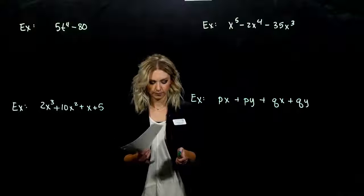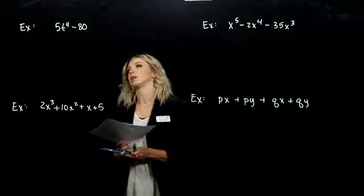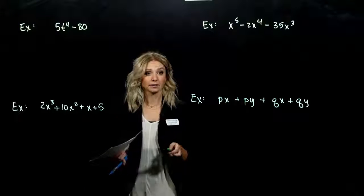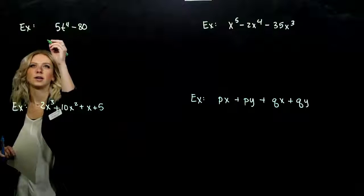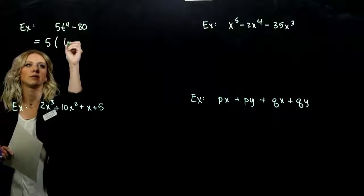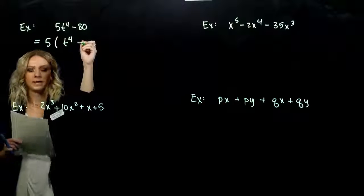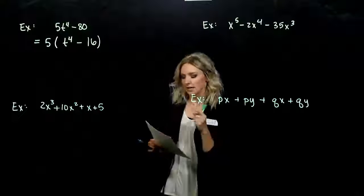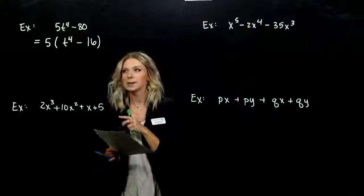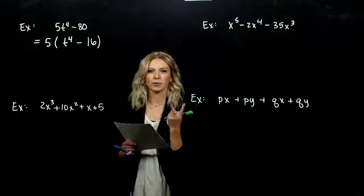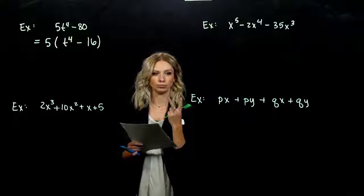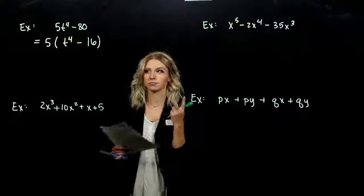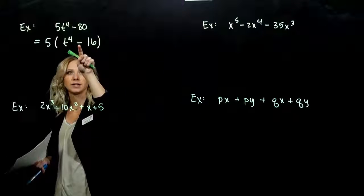In the first example, we look and see: is there anything common we can take out of both terms? Yes — we can take out a 5. When we do that, we're left with T⁴ minus 16. Now, looking at the number of terms after taking out the GCF, we have two. The first question should be: is it a difference of squares? It is — we've got a perfect square, a perfect square, and a difference.